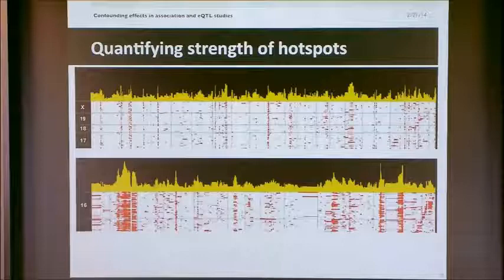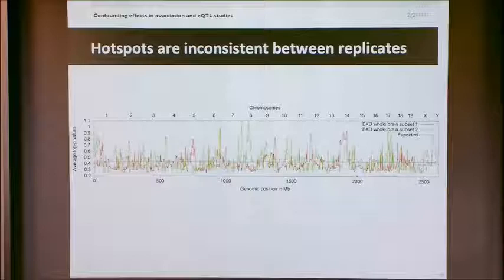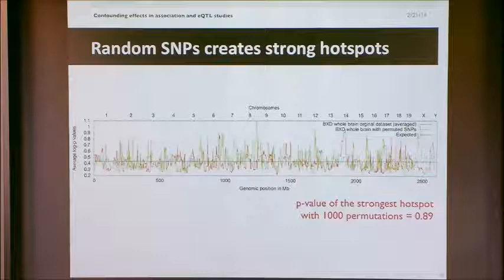We found that the hotspots were inconsistent between the replicates. We thought maybe it was a power issue, so we randomized the data and tried again. In the randomized data we actually found even stronger hotspots than in the unrandomized data — that was really weird. Our original data had a p-value of only 0.89 for the strongest hotspot.